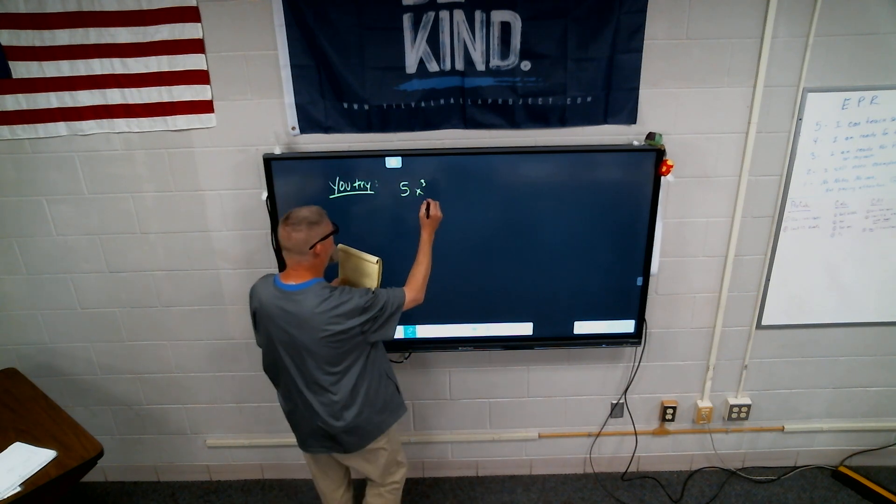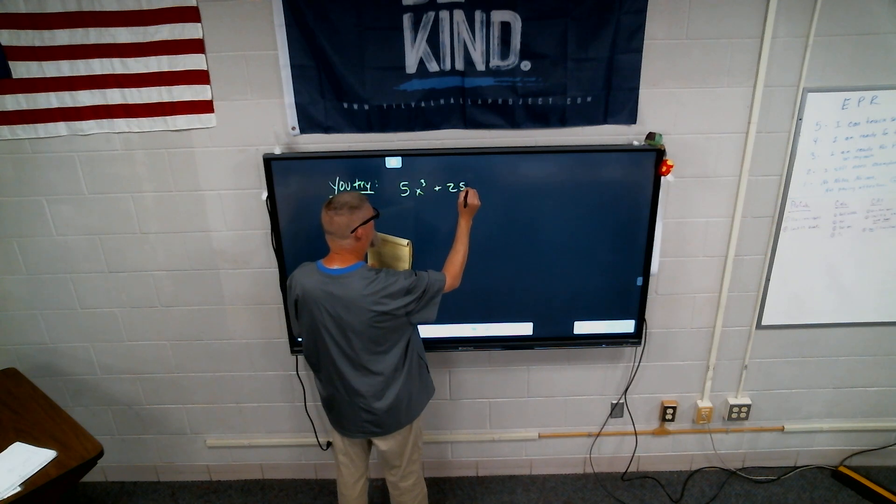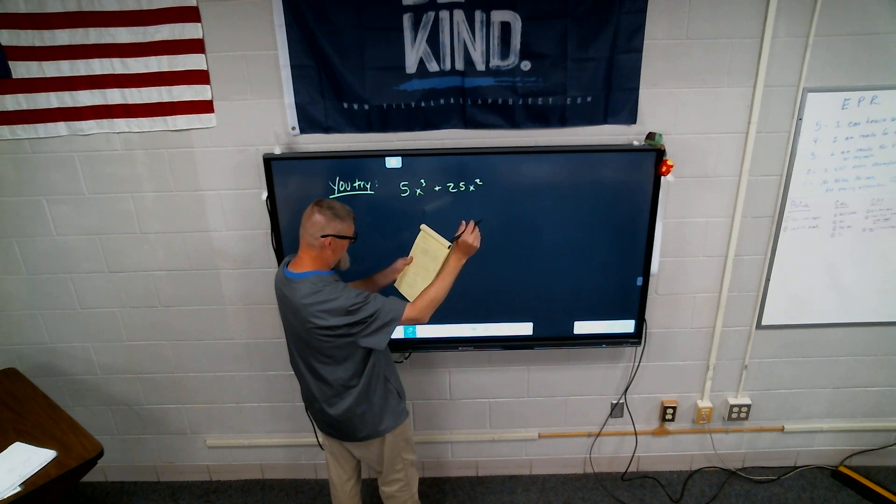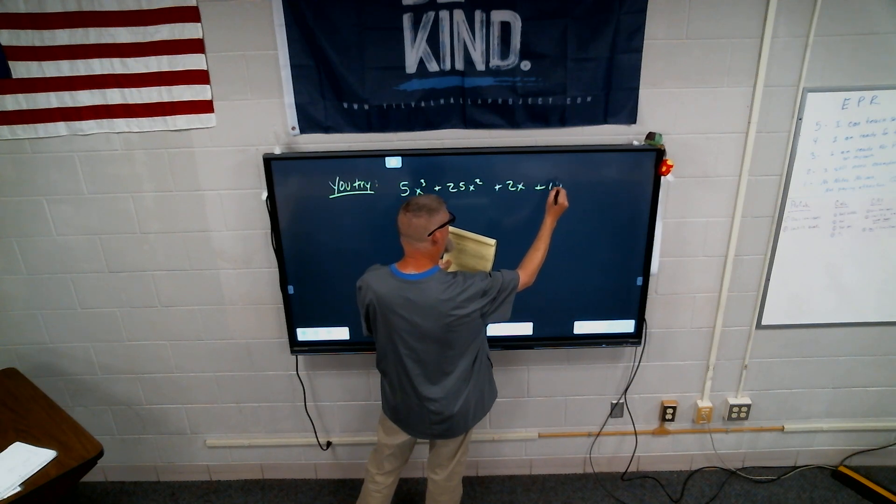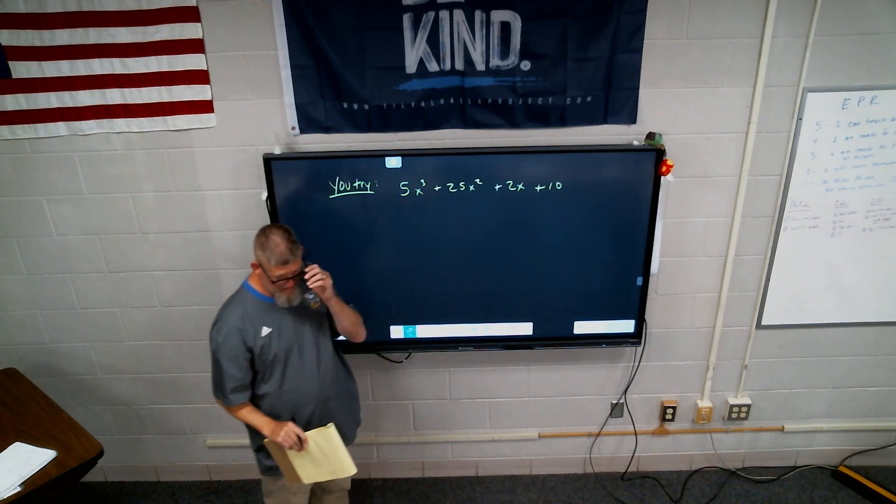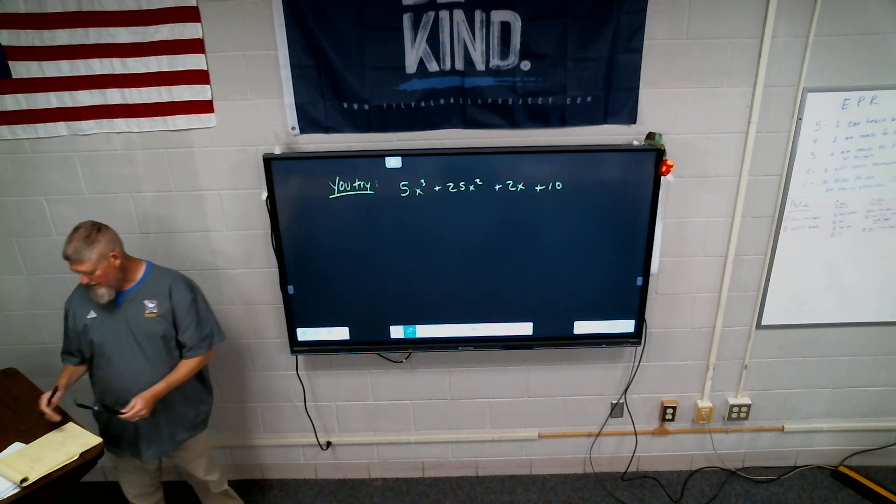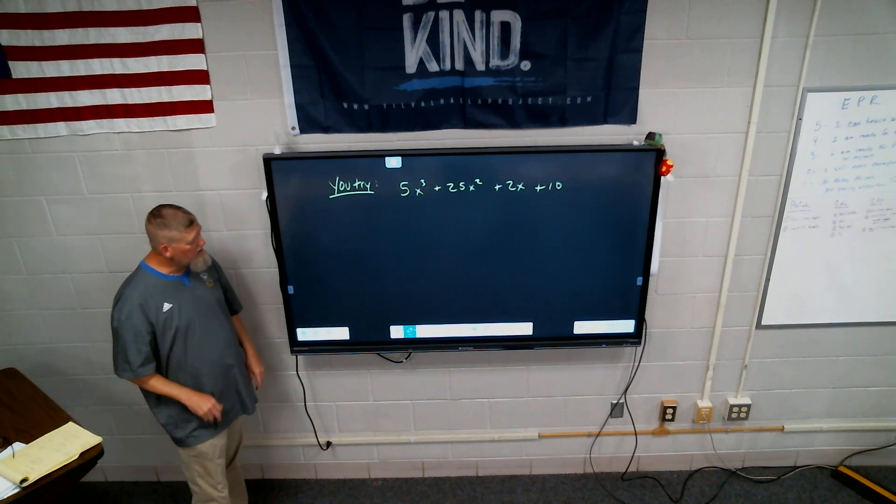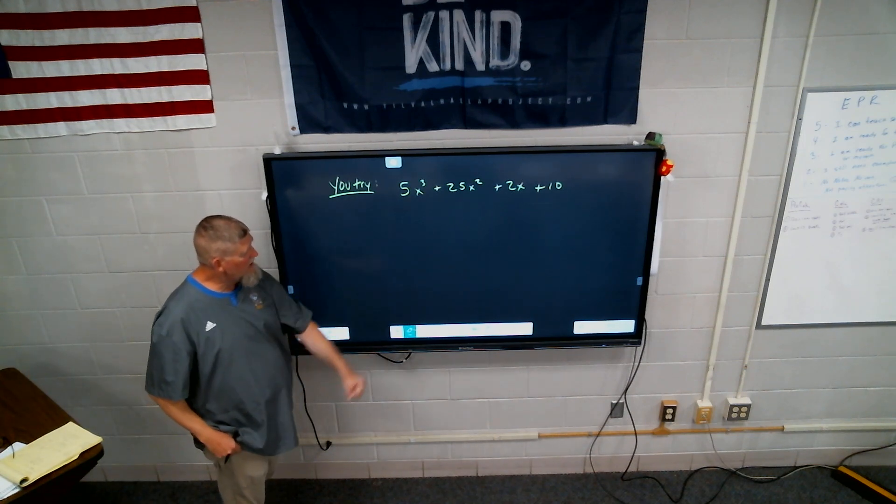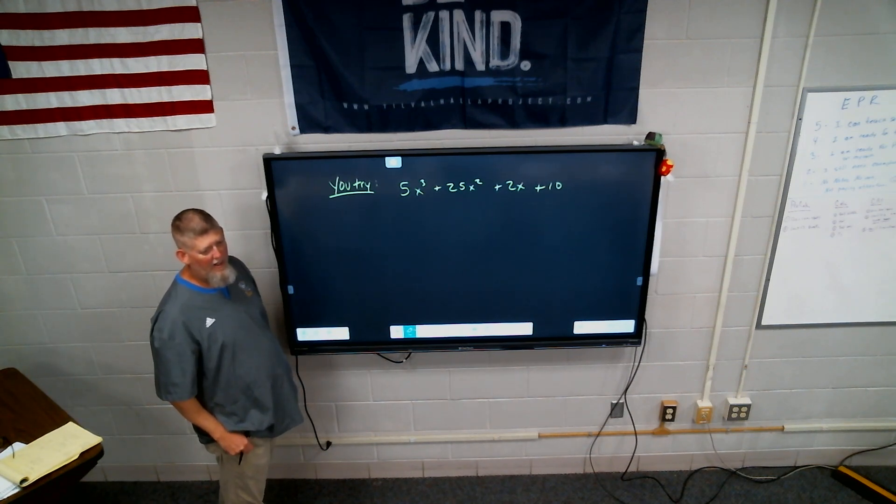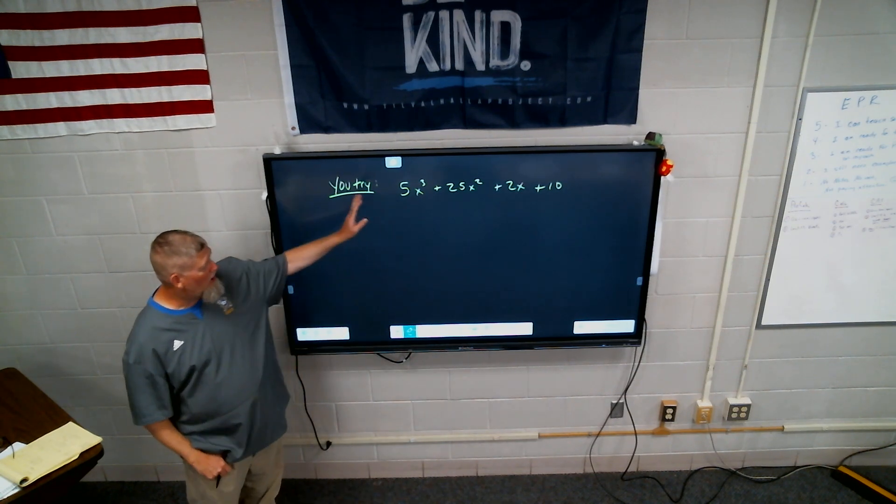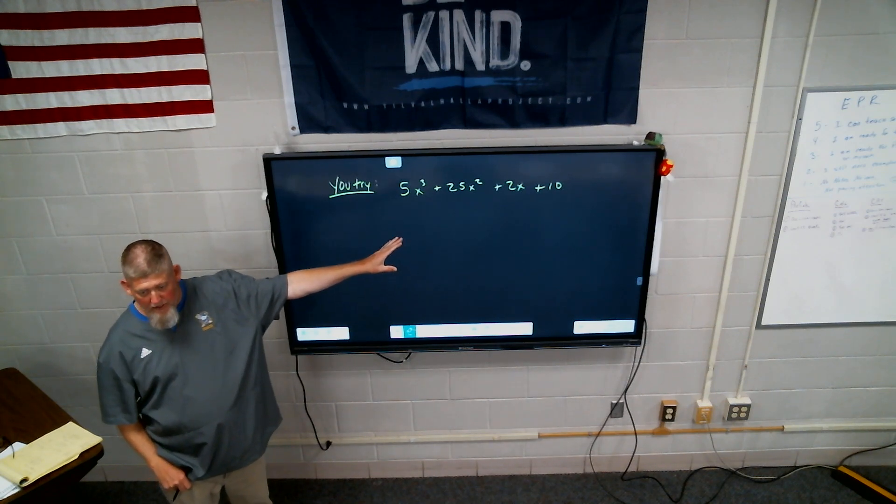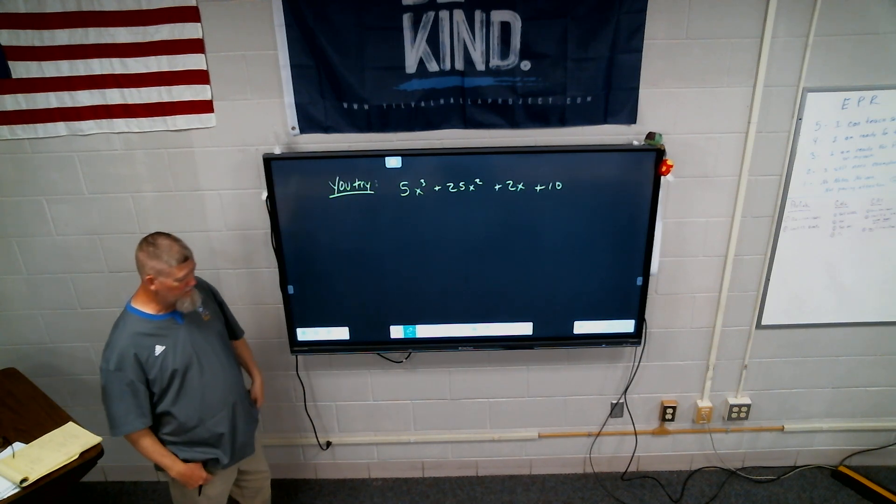So here we go. 5X cubed plus 25X squared. Practice it until you can't get it wrong. Some people say practice it until you get it right. No, practice it until you can't get it wrong. How's that for a little emotional? That was so beautiful. You should put it on a poster with a cat. Tell it to Miss Lopez. She'll cry. All right. Group these up. Is there anything in common on all four of these? No. Factor. Group and factor.